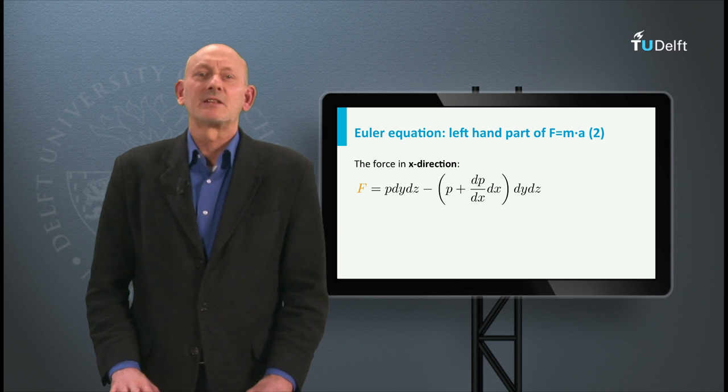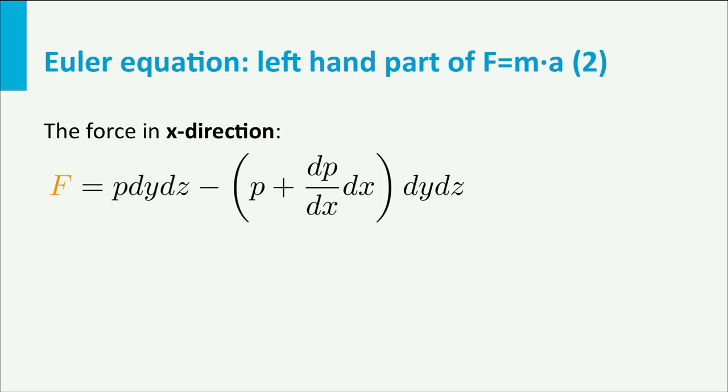Now back to Newton's second law. If we concentrate on the force part at the left hand side of the equation, we can write for the resulting force on the volume in x direction: p times dy dz minus (p plus dp dx times dx) times dy dz, or F equals minus dp over dx times dx dy dz.